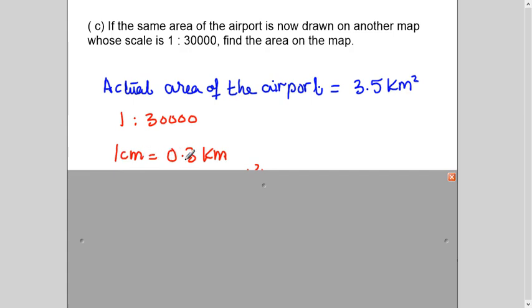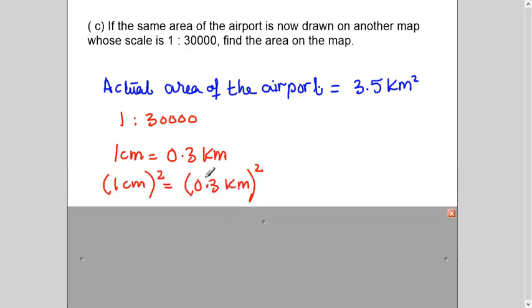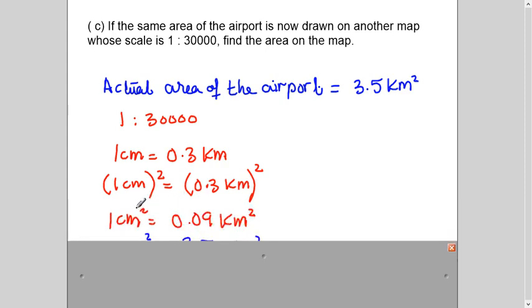So I will simply change the new scale into kilometers. So 1 centimeter is to 0.3 kilometers. I have divided it by 100,000. Because centimeter, when we convert into kilometers, we divide by 100,000. And after that, I'm squaring both sides. The reason is, I have to deal with area. And the unit of area is in square. So just like in the last part, I'm squaring both sides. It will give me 1 square centimeter equals to 0.09 square kilometers. So I got my map and scale in a square unit.